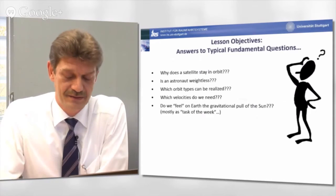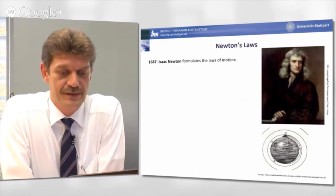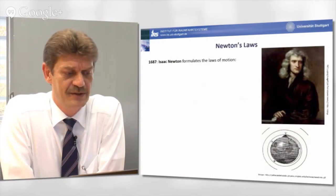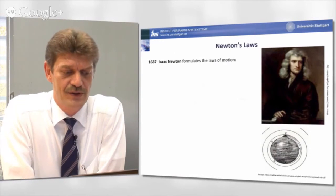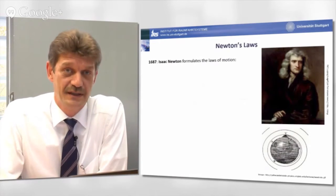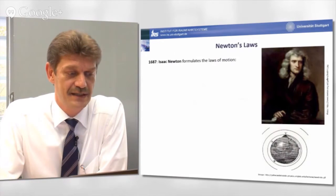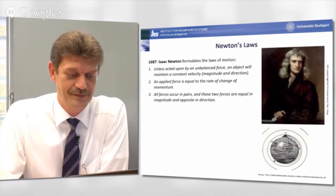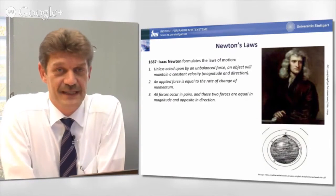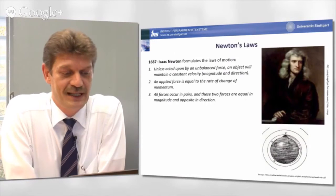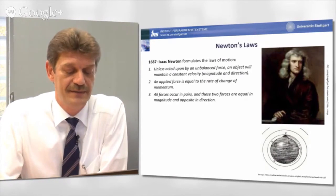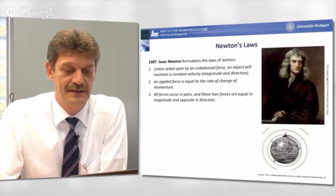The basics for the investigation of orbital mechanics were given by Newton. Just to recapitulate Newton's laws of motion, which we published in 1687, some centuries ago. The first law states, unless acted upon an unbalanced force, an object will maintain a constant velocity in what is important to note in magnitude and direction.